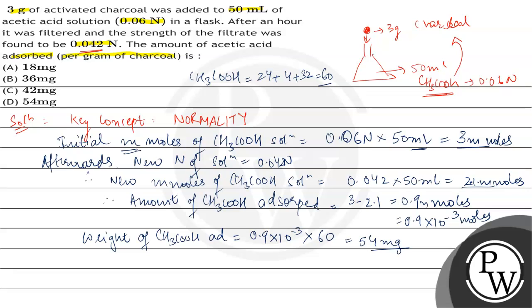54 milligrams of acetic acid was adsorbed on 3 grams of charcoal but you are required to find out per gram of charcoal. So if 3 grams has 54 milligrams adsorbed, then 1 gram has 54 by 3,